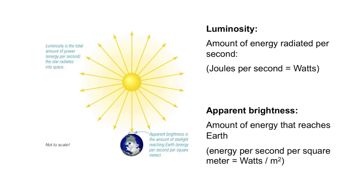Luminosity is an intrinsic property of an object. It is how much total energy that object is radiating into space per unit time. This is a property intrinsic to the object — it doesn't matter where or how far away that object is. The units on luminosity are energy per unit time, or joules per second, or watts. So when you turn on your 45-watt light bulb, that light bulb is consuming 45 joules of energy per second, and if perfectly efficient, it would be radiating 45 joules of energy per second into space.